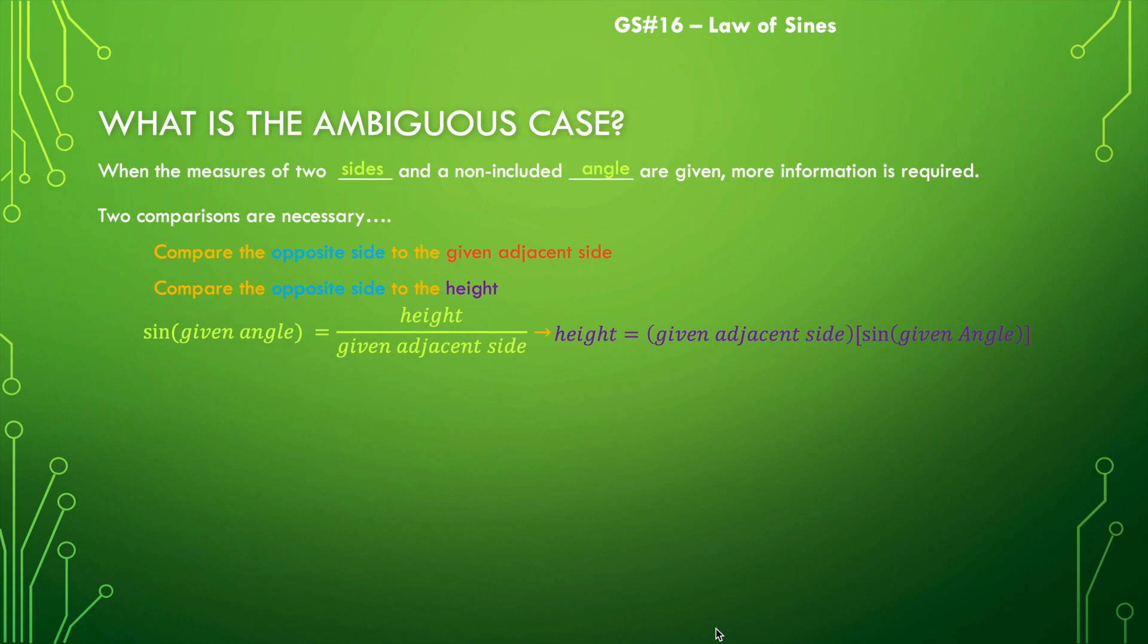Now, often we just say it's just B sine A. And that's true if we label the given angle, angle A, and that adjacent side, side B. But if they're labeled anything other than that, we need to be very careful. All right. So let's look at some situations. And you'll be able to see why this is called the ambiguous case because there are so many possibilities.